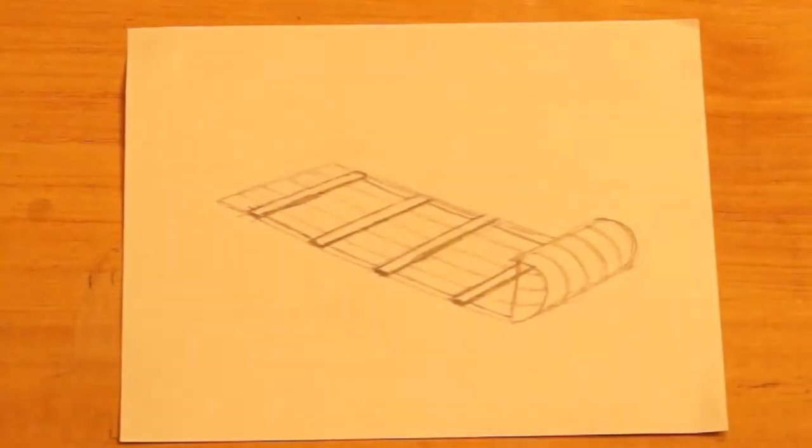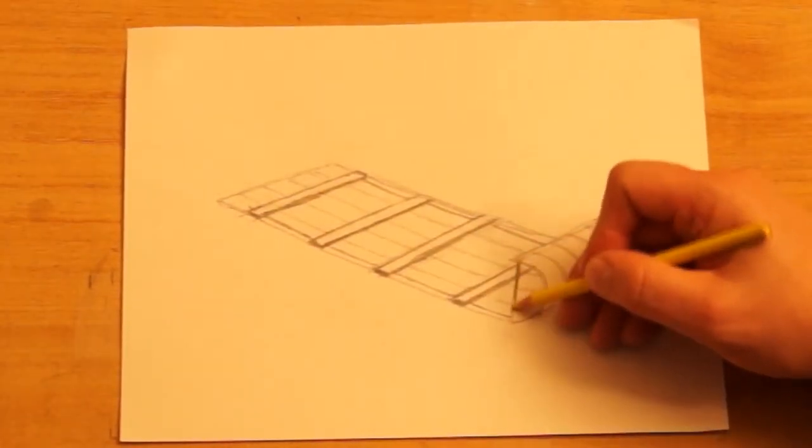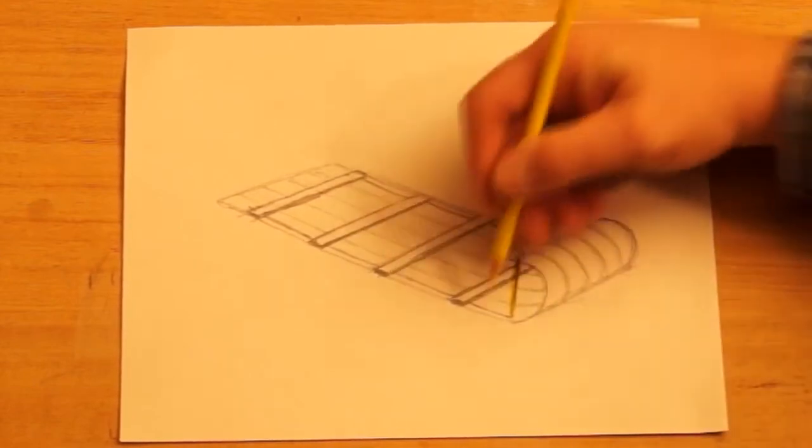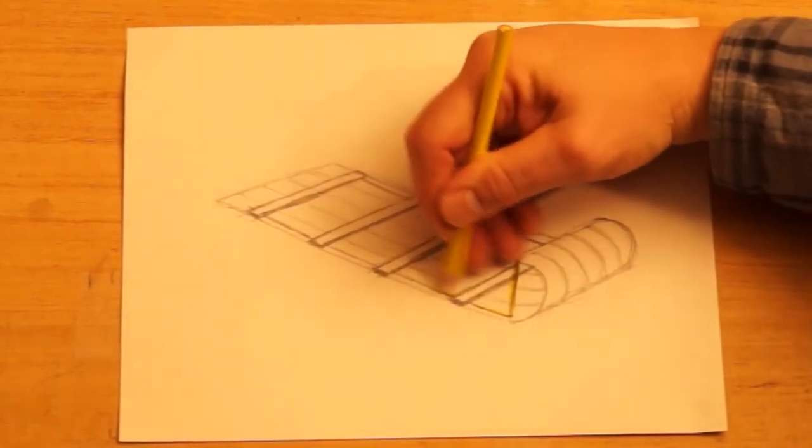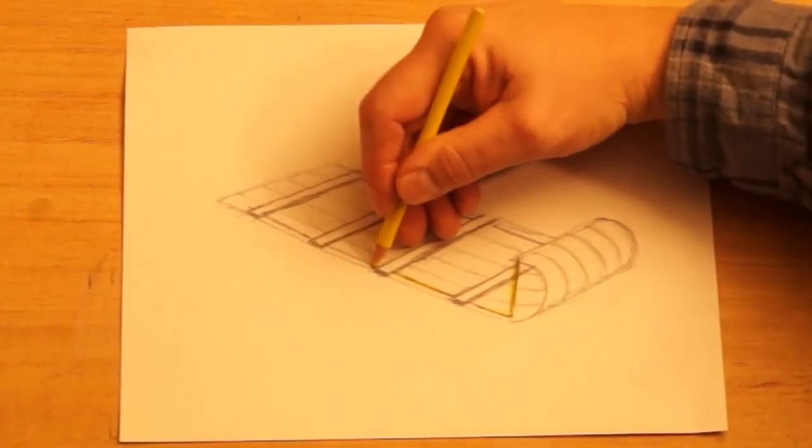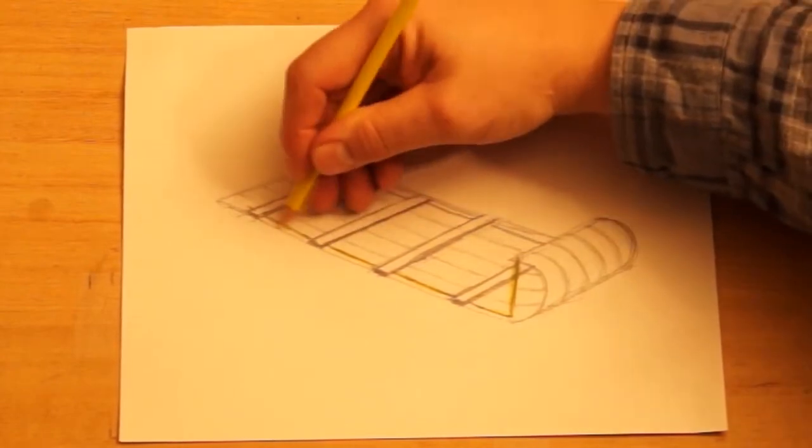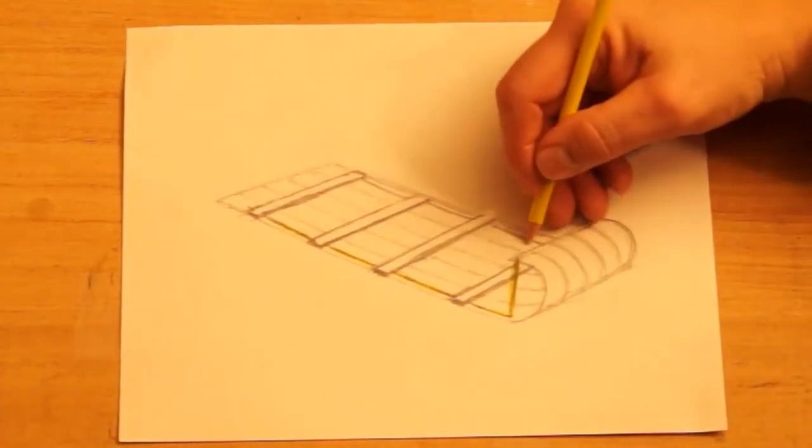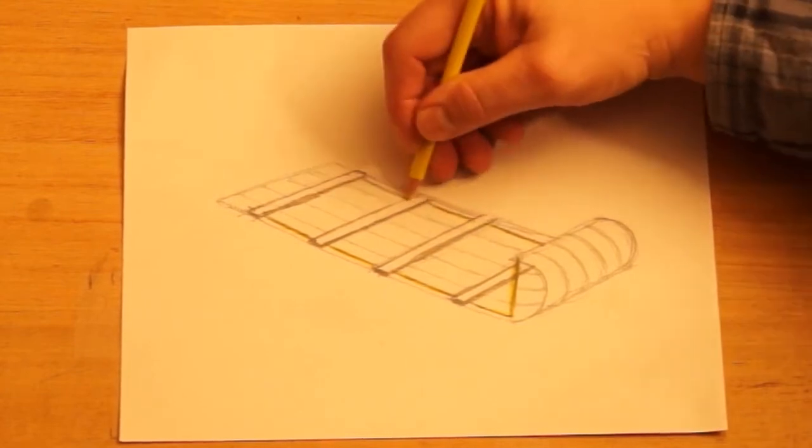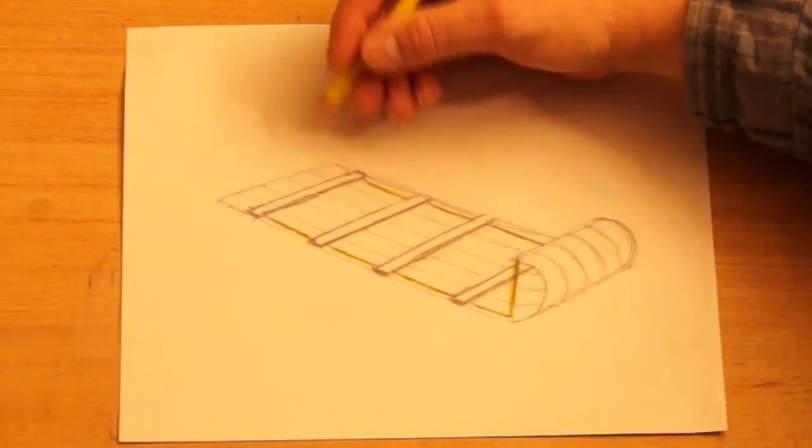And to kind of emphasize that rope or highlight it a little bit I'm going to take a yellow and go over the top of this line.